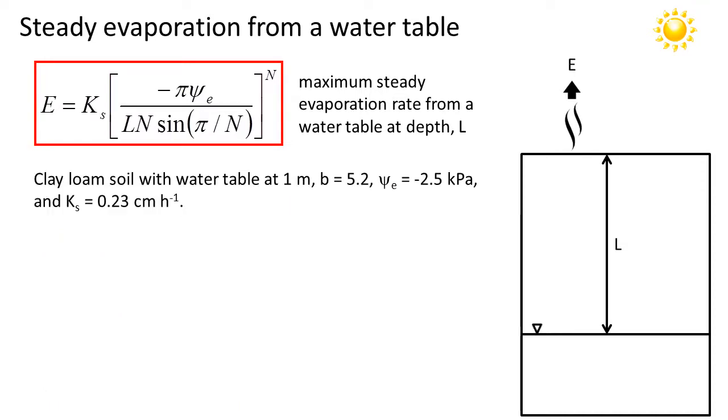So imagine we have now clay loam soil, so here on the right, this is now representing a uniform clay loam soil with a water table at one meter depth. From the prior table, we have B is equal to 5.2, the air entry potential is minus 2.5 kilopascals, and the saturated hydraulic conductivity is 0.23 centimeters per hour.